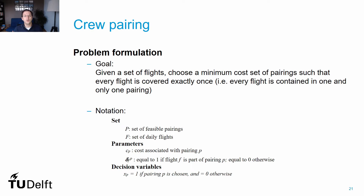Let's start with the crew pairing problem, recapitulating the goal of the problem. The problem consists in choosing the minimum cost set of pairings that cover all flights in our schedule once and only once. Given that some crews can only operate a given aircraft type, particularly the cockpit crews, this problem is normally solved separately for each aircraft type. To formulate the problem we need two sets: one referring to the feasible pairings considered, and another referring to the flights from the schedule that have to be covered for a given fleet type.